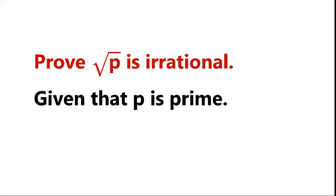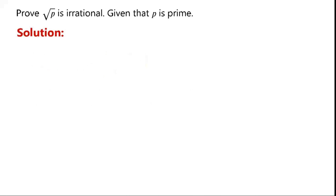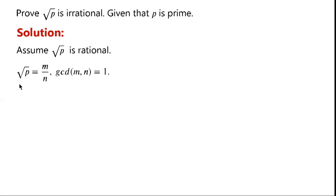Prove that root p is irrational, given that p is prime. We want to prove that root p is irrational. First, we assume that root p is rational, which means there exist m and n, which are positive integers, such that root p equals m over n, and the greatest common divisor of m and n is 1.